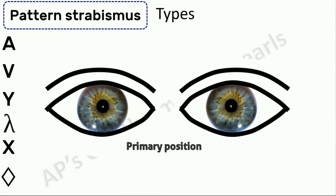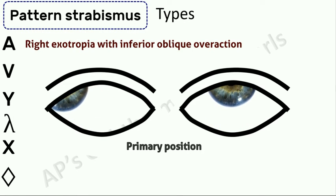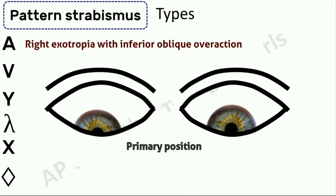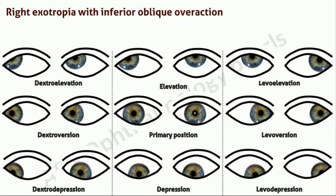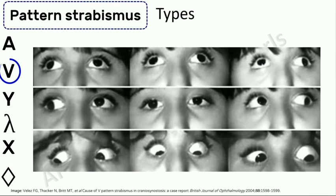Similarly, for an exotropia with inferior oblique overaction, you can see the greater divergence in upgaze. You can appreciate the V pattern here.